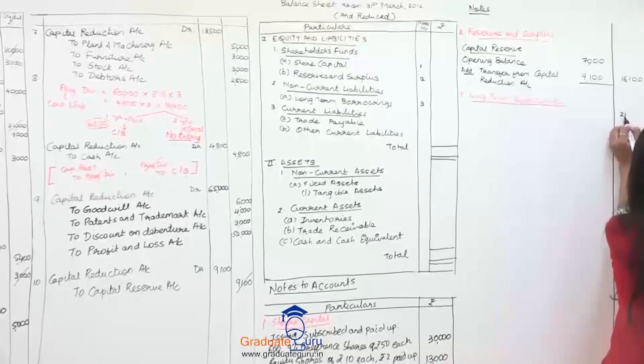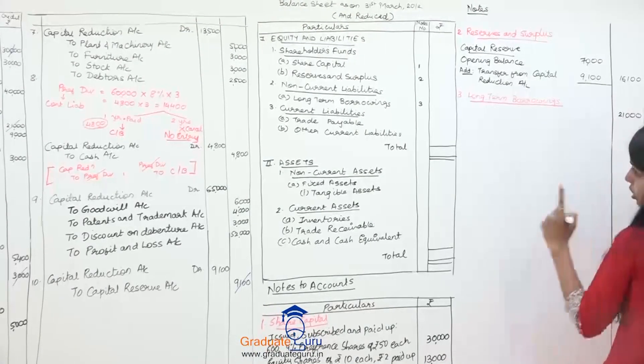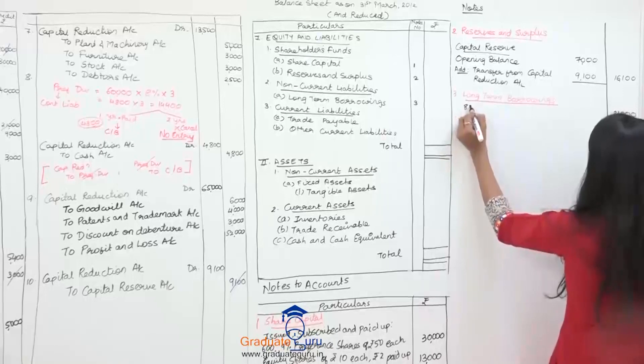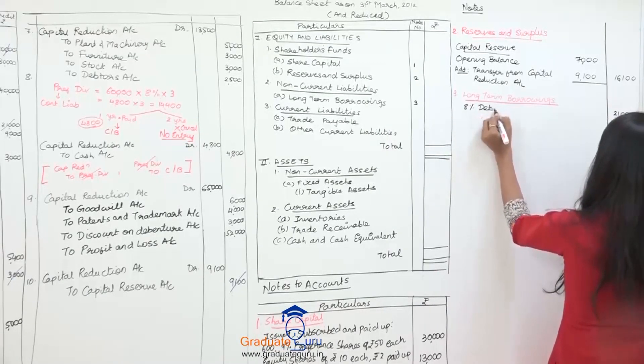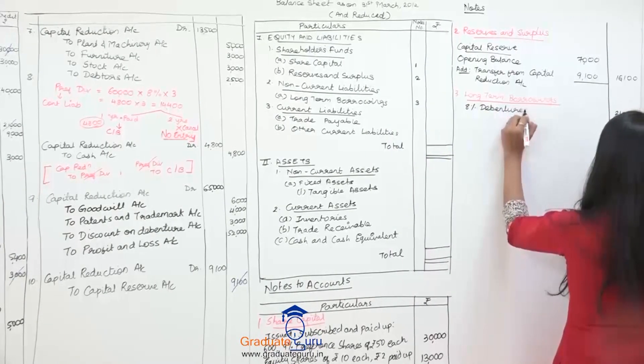So yahan pe likh do. Twenty one thousand. And uske saamne description kya hai. Eight percent debentures. So I would write eight percent debentures. Aur rupees. Twenty one thousand.